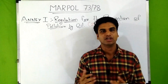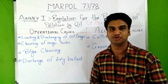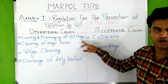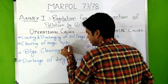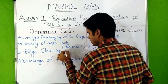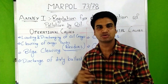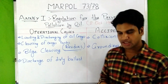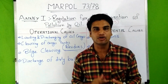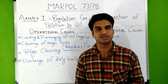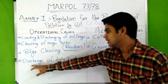The operational causes of oil pollution include: loading and discharging of oil cargo; cleaning of cargo tanks — where residues, meaning small amounts of oil left after discharge, mix with dirty water and are discharged into the sea; bilge cleaning; and discharge of dirty ballast. These are a few of the main operational causes.